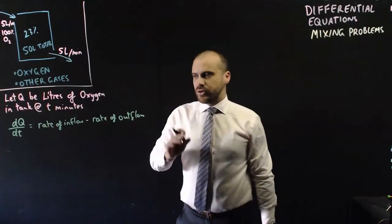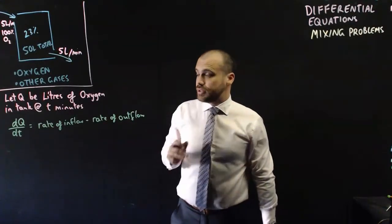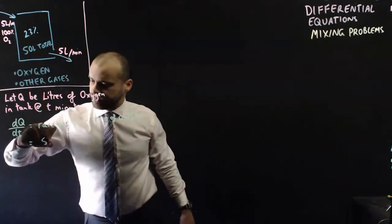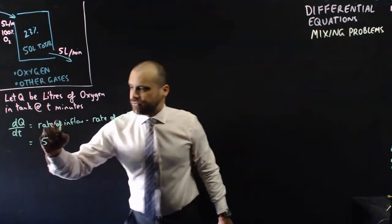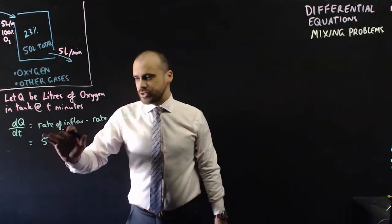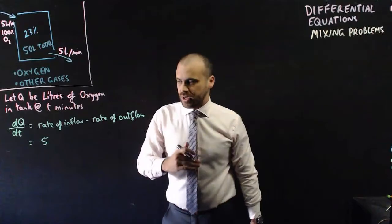Now, the rate of inflow in this question is going to be really, really easy. It's coming in at a rate of 5. Now, you're going to be tempted here to say, like, 5t, 5 times t, but that's not it. It's a constant rate of flow of 5.